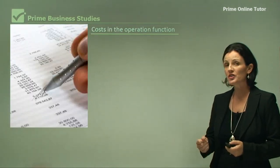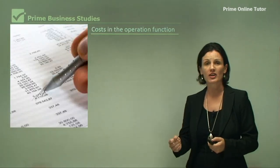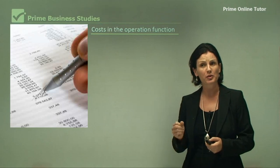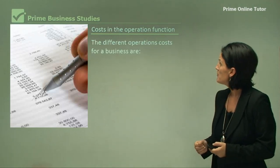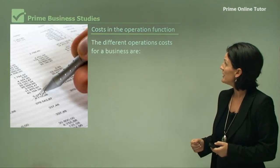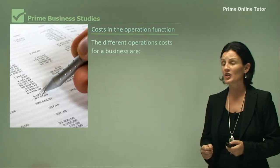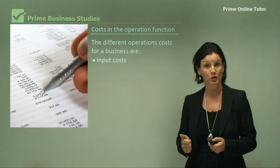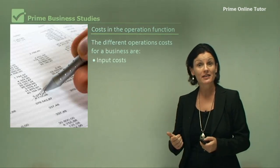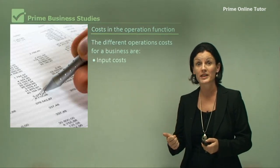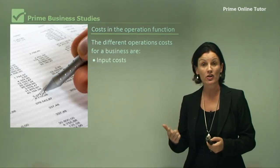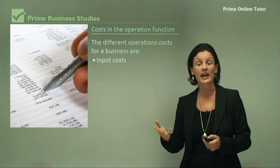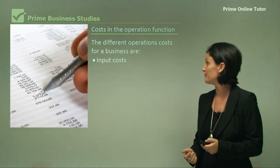Now costs in the operational function will depend on the product that's being produced. But generally speaking the different costs are: firstly you've got your input costs. Now these are things like raw materials, your labour, your time, your land, your machinery.